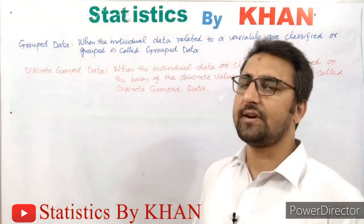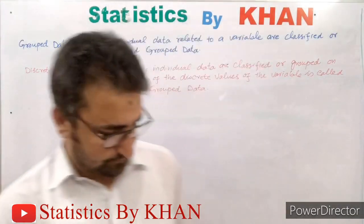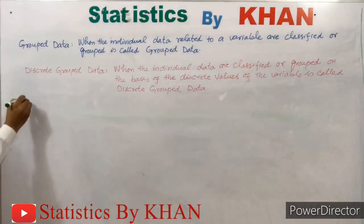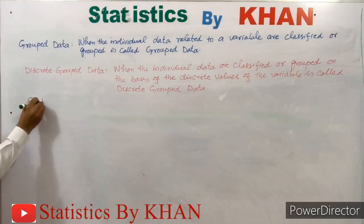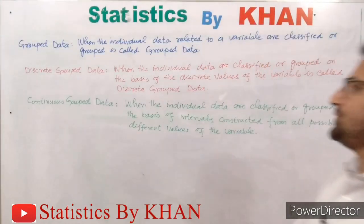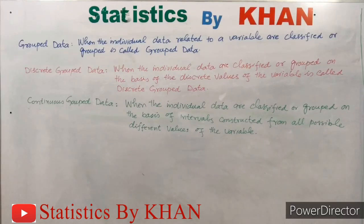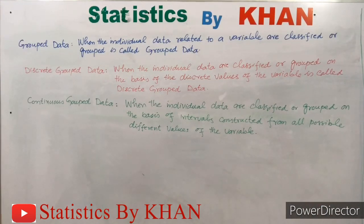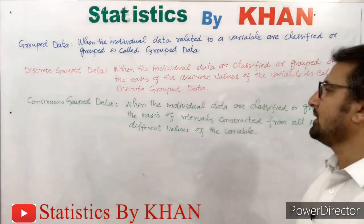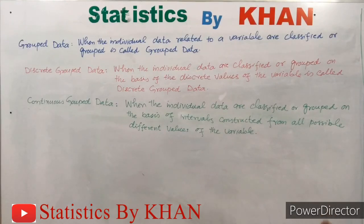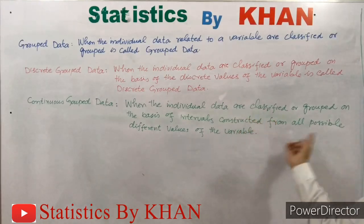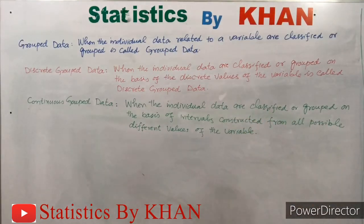Let's define continuous grouped data. When the individual data are classified or grouped on the basis of intervals constructed from all possible different values of the variable — so instead of discrete values, if we make some intervals from all possible values of the variable and the individual data are classified among those intervals — then the resulting dataset is called continuous grouped data.